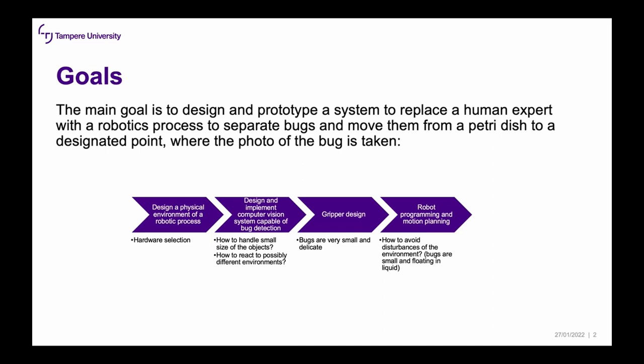The third goal would be the gripper design. Bugs are very small and delicate so the gripper has to be special. The last goal is robotics programming and motion planning — how to avoid disturbances of the environment, for example when picking the bugs, considering that they are in liquid and very small, so even small motion can disturb the whole system.